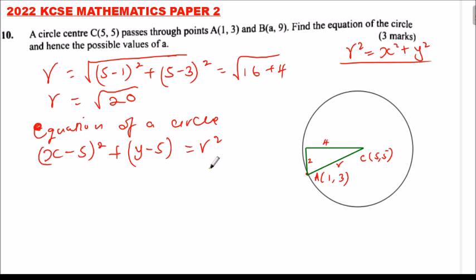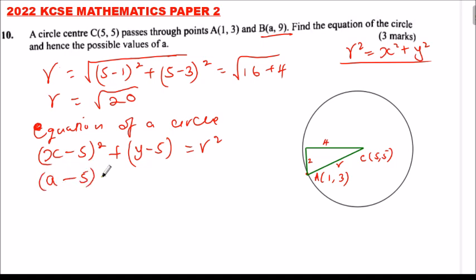We now use point B, where the coordinates are (a, 9). We replace x with a and y with 9, giving us (a minus 5) squared plus (9 minus 5) squared equals the square root of 20 squared, which is 20.